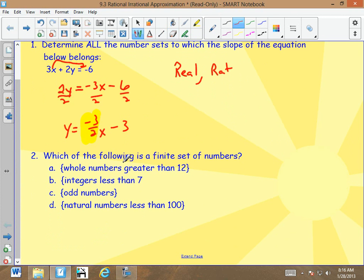Which of the following is a finite set? Finite means ends. Whole numbers greater than 12. Does that ever end? No, it goes forever and ever. Integers less than 7. Does that ever end? No, because integers are negatives and positives and zero. That never ends.